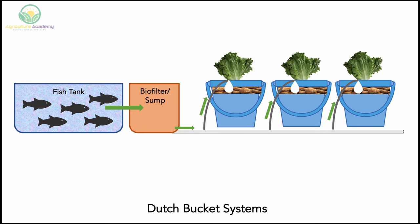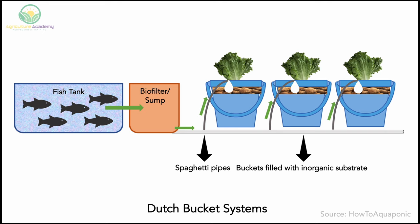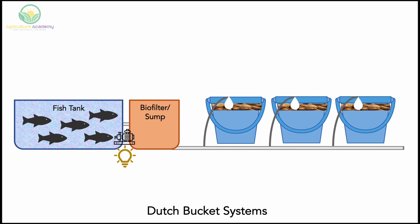Most commonly, one bucket will support a single plant. If you want to build your own Dutch bucket system, you will need a series of buckets filled with your inorganic substrate of choice, spaghetti pipes to supply water to the buckets, your fish tank and biofilter system as described for the NFT and ebb and flow systems, and a pump, again preferably with a backup battery system.